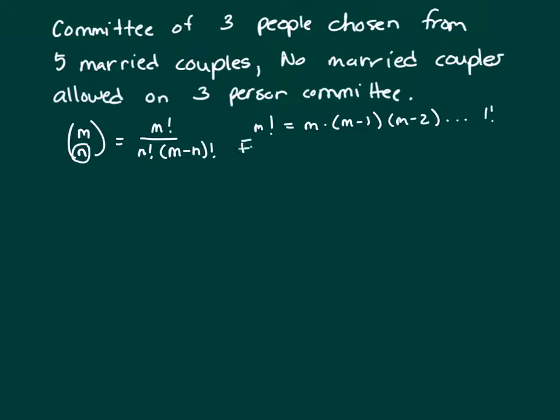For example, this has nothing to do with the problem. 3 factorial would be 3 times 2 times 1 or 6.